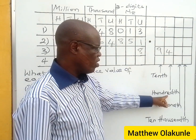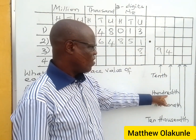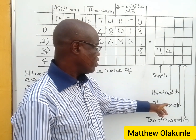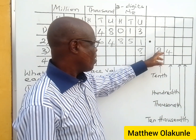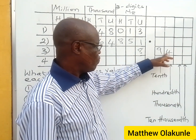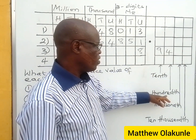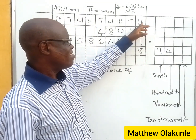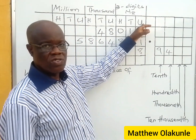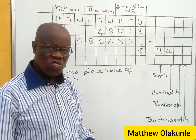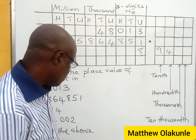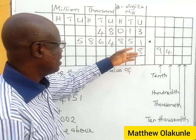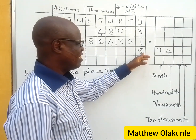The next digit, which is four, is four-hundredths — that's four over one hundred. So you have nine-tenths, then four-hundredths. For the eight, eight is in the units place. How do you read out this number?